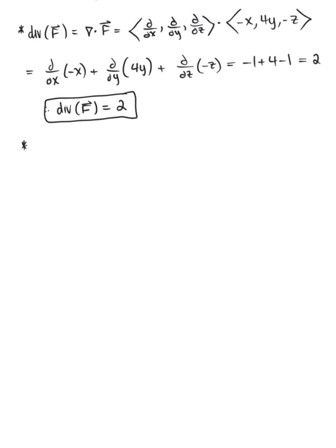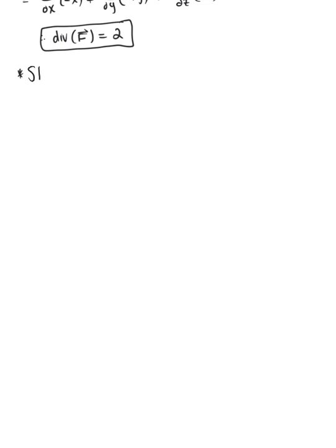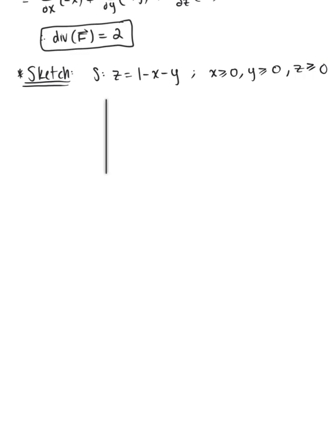To find the bounds, we want to sketch this tetrahedron. We keep in mind that it is bounded by the surface S defined by z equals 1 minus x minus y in the first octant, where x is greater than or equal to 0, y is greater than or equal to 0, and z is greater than or equal to 0. So let's think about space — we have the z-axis, the x-axis, and the y-axis.